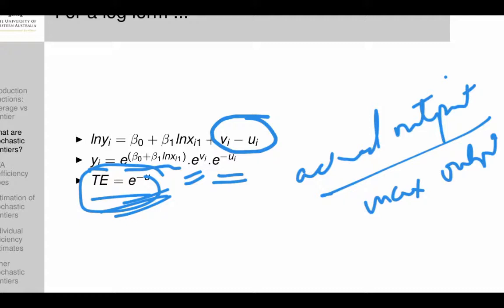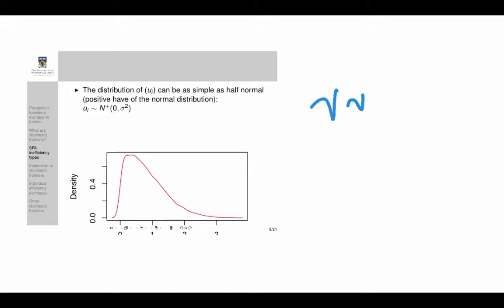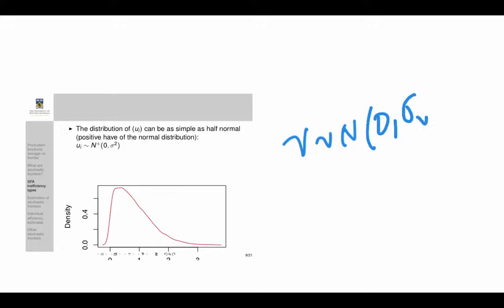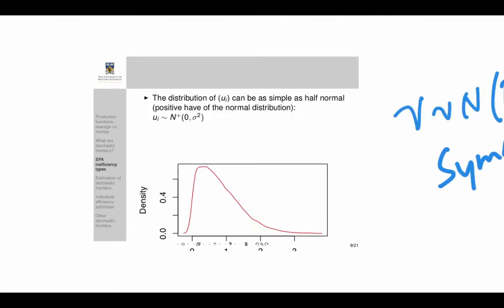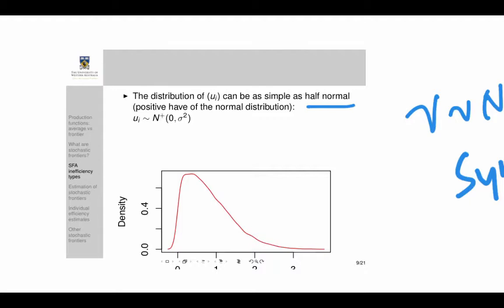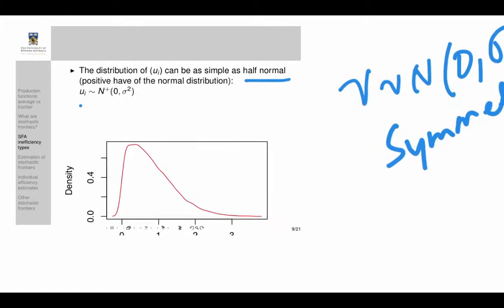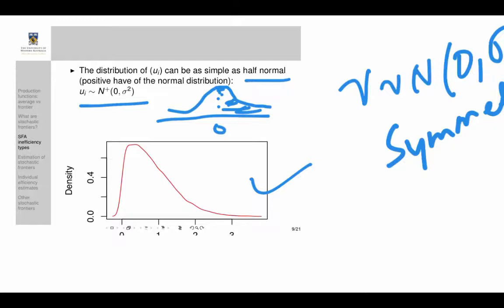Typically, V, the noise term, is assumed to be normally distributed with a mean of zero and variance σ_v². For the inefficiency term U, which is asymmetric because it must always be positive, one of the most common assumptions is the half-normal distribution. Under the half-normal assumption, U comes from a normal distribution with zero mean but only from the positive side of that distribution — a half-normal distribution.